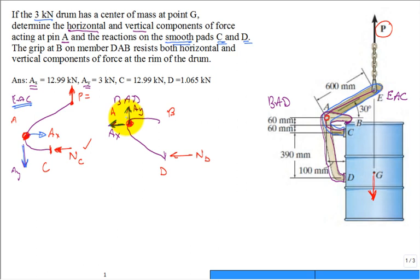I'm not making a big deal of the color coding. Now, what about the B? Well, what did they say? Let me read it here. The grip at B on member DAB resists both horizontal and vertical components of the force at the rim of the drum. So it doesn't have just only a horizontal. It has a horizontal as well as a vertical component. If we look at it, what do you think B is going to do? Do you think the Bx will be in the positive X or in the Bx will be in the negative X? That's a little harder to determine, isn't it? Maybe do this.